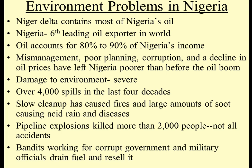Corruption and mismanagement will do that to you. Nigeria has severe environmental problems — over 4,000 spills in the last four decades. Cleanup has been slow, fires have started, acid rain happens because of the fires, pipeline explosions occur, and people working for the corrupt government and military drain the fuel and resell it for their own purposes. There are a lot of issues in Nigeria regarding the oil.